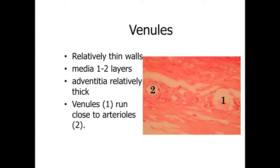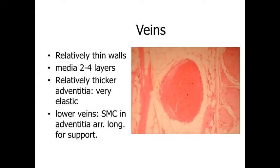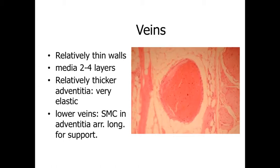Venules often appear collapsed in sections. In a larger vein, we see a very large lumen diameter packed with red blood cells but a relatively thin wall — maybe a couple of layers of tunica media and then adventitia around the outside. These vessels are very elastic as they store blood. In veins below the level of the heart, smooth muscle cells in the adventitia may be arranged longitudinally for support, because lots of blood with little wall structure can cause the vessel to expand outward and potentially collapse, leading to conditions like varicose veins.